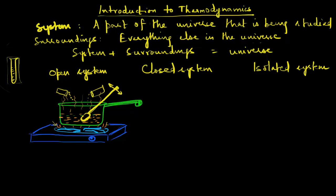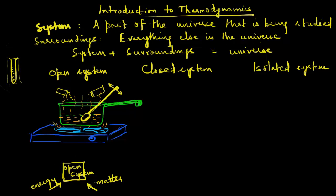Schematically, in an open system, energy and matter can freely go into the system from the surroundings, and energy and matter can also go out of the system into the surroundings. There is a free exchange of both.